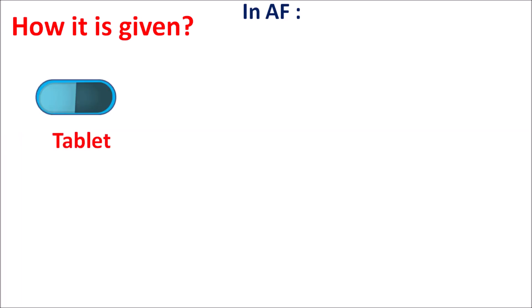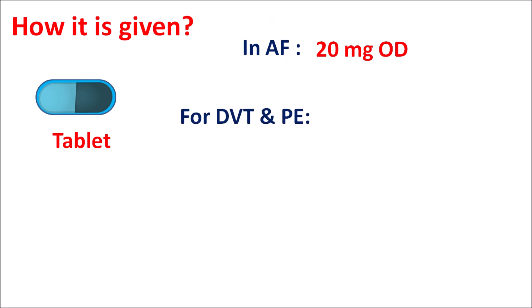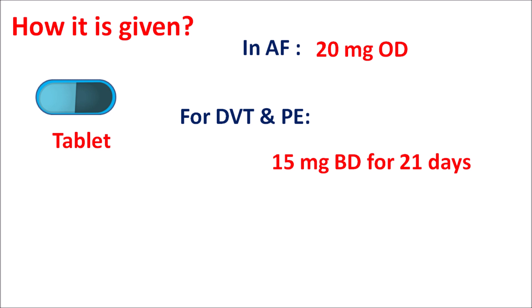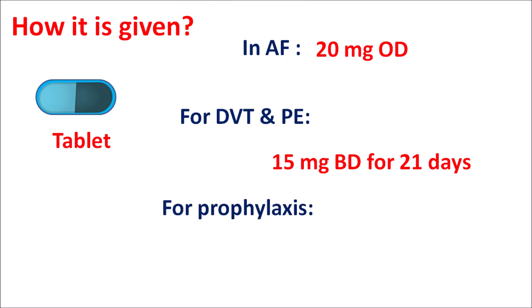How is it given? This drug is available as a tablet. For non-valvular atrial fibrillation to prevent thrombotic events, this drug can be given at a dose of 20 mg once daily. For the treatment of deep vein thrombosis and pulmonary embolism, this drug can be given at a dose of 15 mg twice daily for 21 days, after which the dose may be increased to 20 mg once daily. These 20 mg and 15 mg doses should be given along with the evening meal, as food reduces the risk of side effects. For prophylaxis of DVT and pulmonary embolism, this drug can be given at a dose of 10 mg once daily, and therapy can be continued based on prophylaxis.